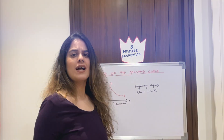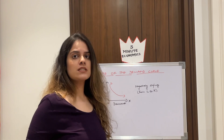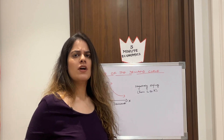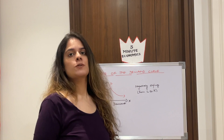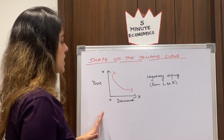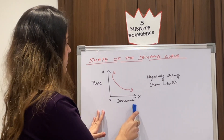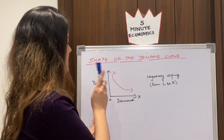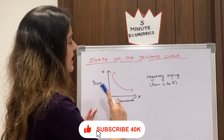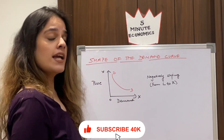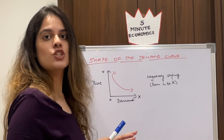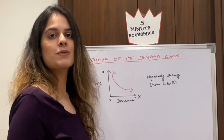Before I begin with the reasons for the negatively inclined shape of the demand curve, a few of you might not know the shape of it, so let me show it to you. This is our demand curve, with demand on the x-axis and price on the y-axis. This red line is the demand curve labeled DD, and it is negatively inclined as you can clearly see from left to right.